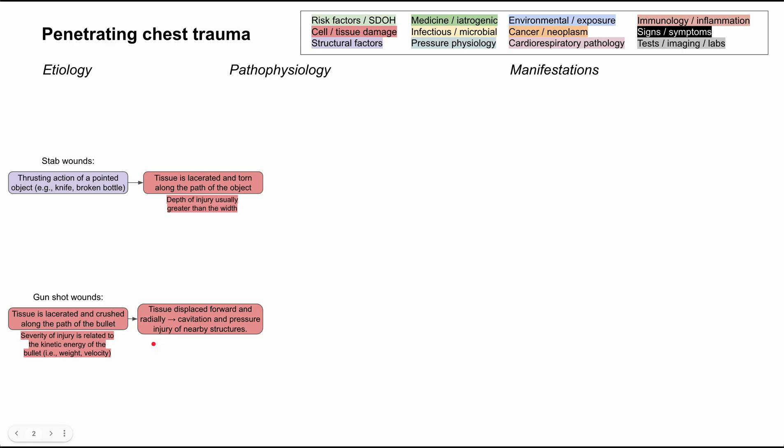The tissue is displaced forward and radially, causing cavitation and pressure injury to nearby structures. Dense organs absorb more kinetic energy than less dense organs, so your liver and bone will be damaged more than squishy stuff like skin or fat.